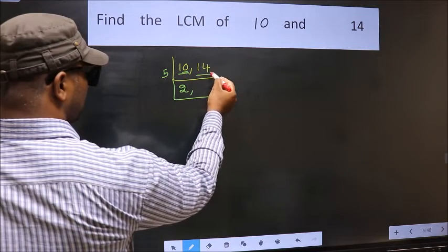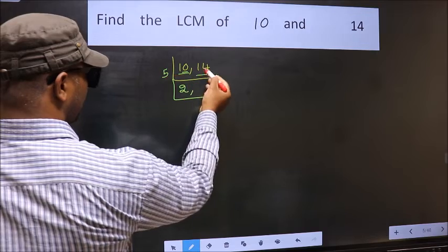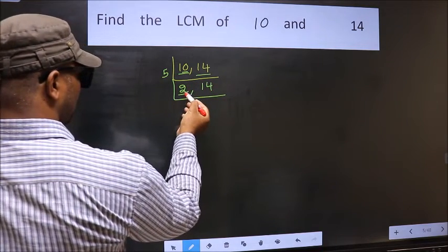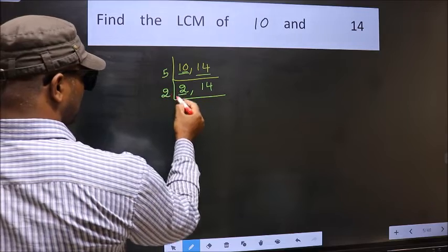Now, the other number 14 is not divisible by 5, so we write it down as it is. Now, here we have 2. 2 is a prime number, so 2 times 1 is 2.